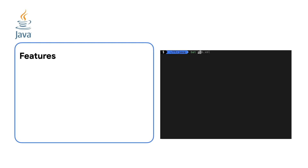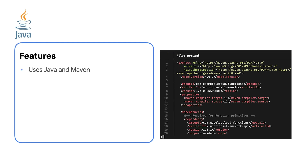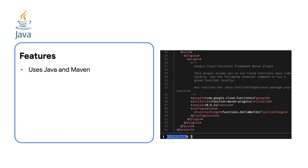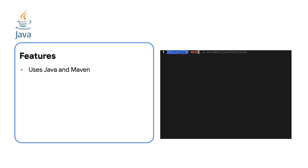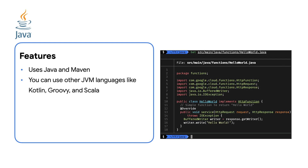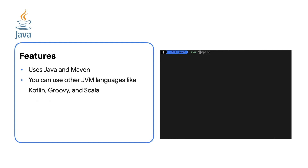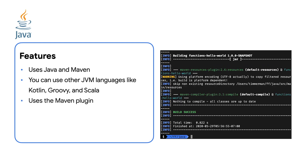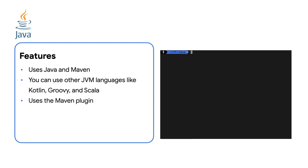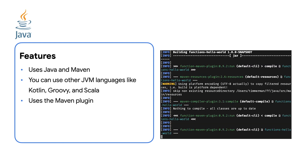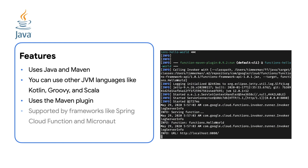The Java Functions Framework uses Java and Maven for building and deploying functions from source. It's not limited to Java — you can use different JVM languages such as Kotlin, Groovy, and Scala. You can use the Maven plugin and run Maven Function Run to run locally and Maven Function Deploy to deploy. It's also supported by frameworks like Spring Cloud Function and Micronaut.